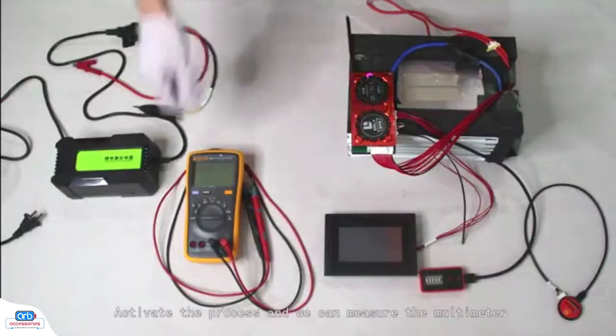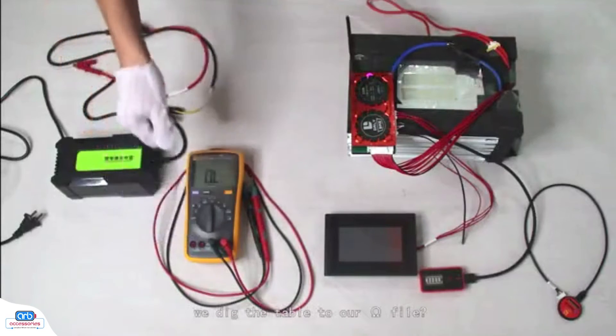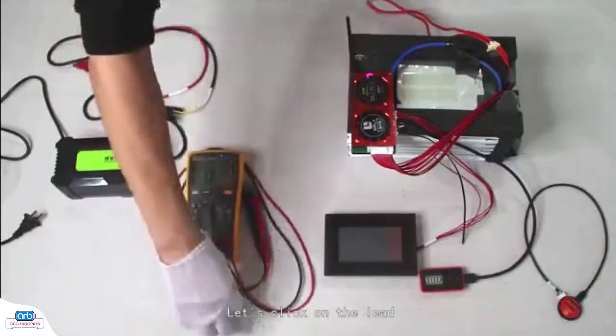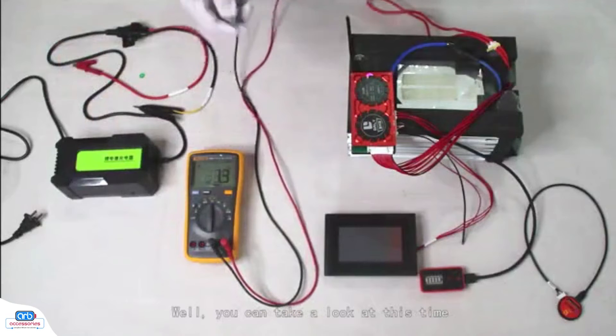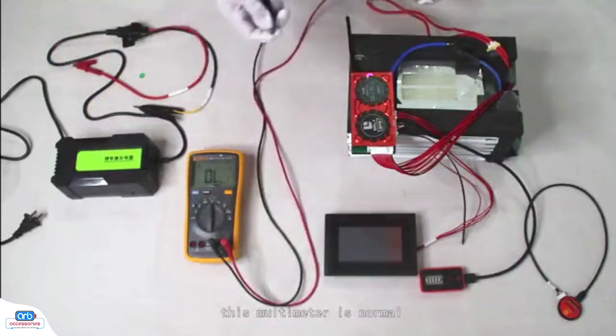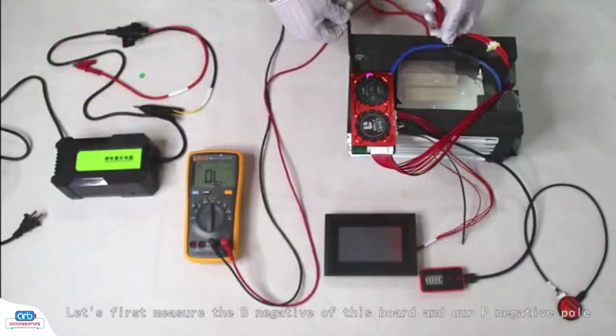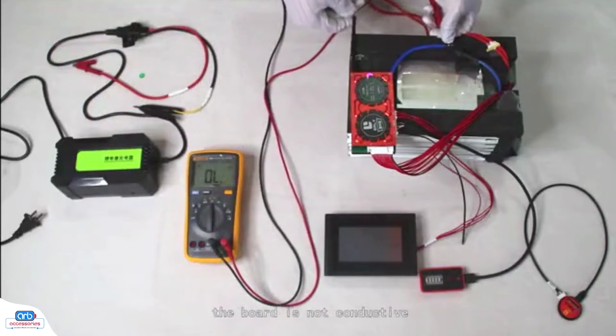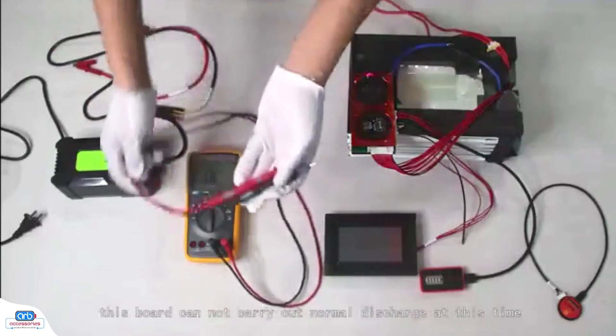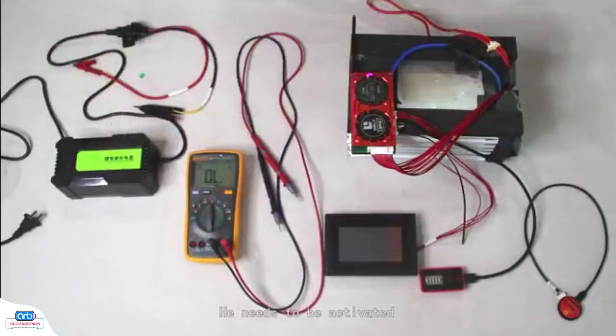We can measure with the multimeter. We set the table to our ohm/megohm setting. You can see at this time, the multimeter is normal. Let's first measure the B negative of this board and our P negative pole. You can see at this point, the board is not conductive. That is to say, this board cannot carry out normal discharge at this time.